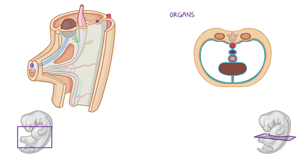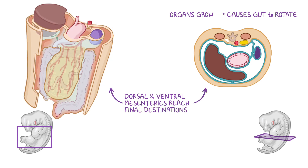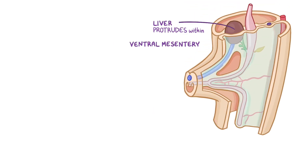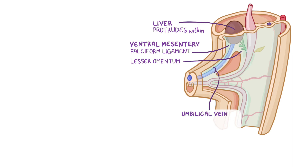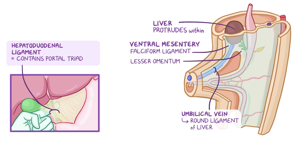The abdominal organs continue to get larger as the fetus grows, which causes the gut to rotate. The dorsal and ventral mesenteries rotate along with the organs they are attached to and eventually reach their final destinations. As the liver develops, it protrudes within the ventral mesentery and forms an anterior part called the falciform ligament and a posterior part called the lesser omentum. The free edge of the falciform ligament contains the umbilical vein, which closes off after birth and remains as the round ligament of the liver. The lesser omentum is made of two ligaments: the hepatoduodenal ligament and the hepatogastric ligament. The hepatoduodenal ligament contains the vessels coming to and from the liver, known as the portal triad, and extends from the proximal part of the duodenum to the liver. The hepatogastric ligament is the rest of the lesser omentum, connecting from the liver to the lesser curvature of the stomach.